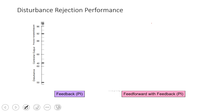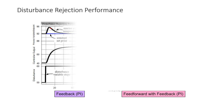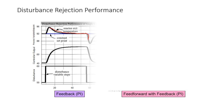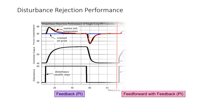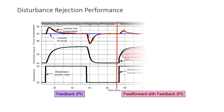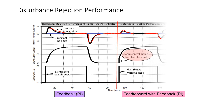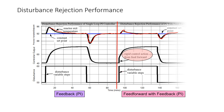Looking at disturbance rejection performance: without feedforward, the deviations from setpoint are large. With feedforward, the deviations are smaller because the controller anticipates the disturbance and acts proactively, so the process is not driven as far away from setpoint.